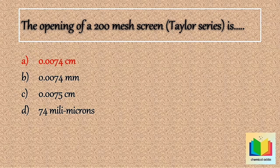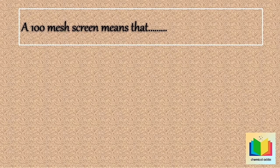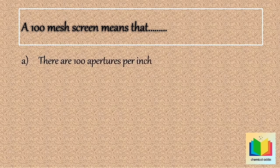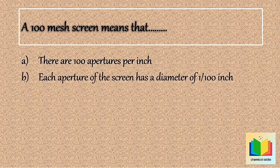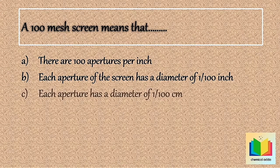Next question: A 100 mesh screen means that — Option A: There are 100 apertures per inch. Option B: Each aperture of the screen has a diameter of 1/100th inch. Option C: Each aperture has a diameter of 1/100th centimeter. Option D: None of these.